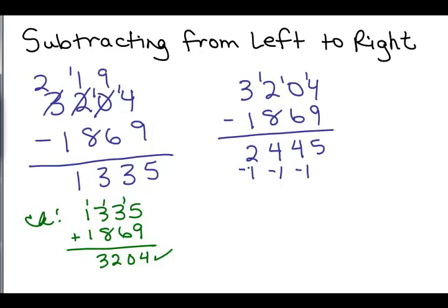So these minus 1s you see down here, you just subtract, so 2 minus 1 is 1, 3, 3, 5, and that's the way you can subtract from left to right.